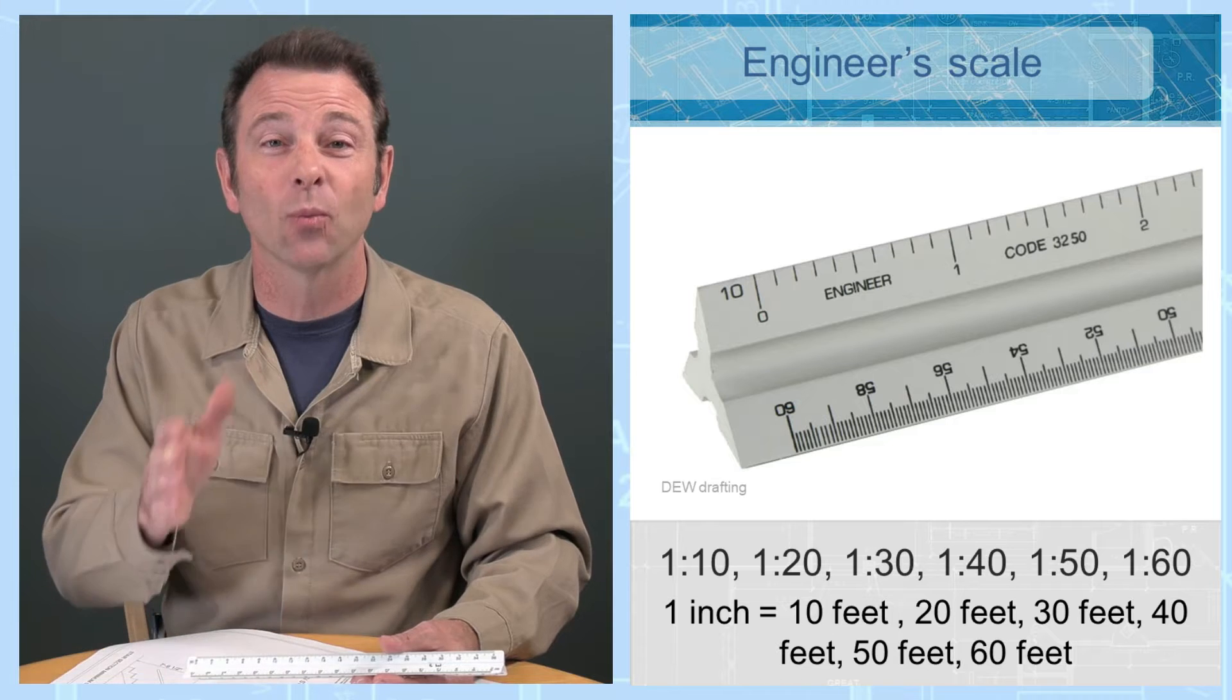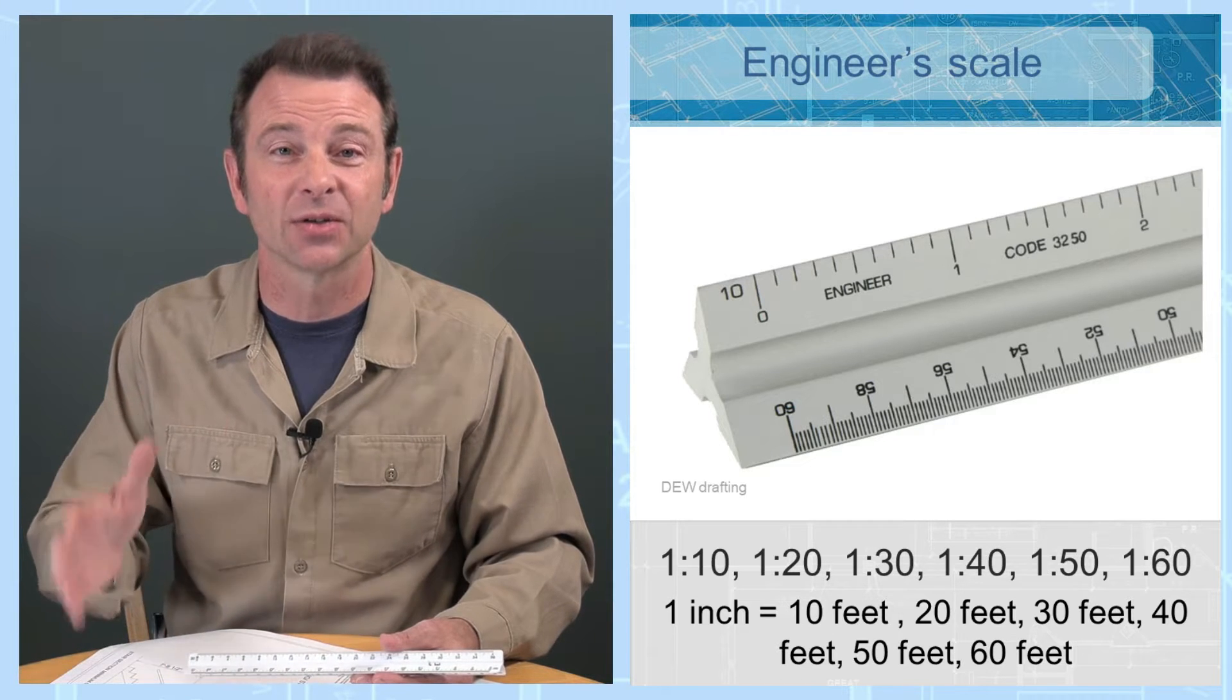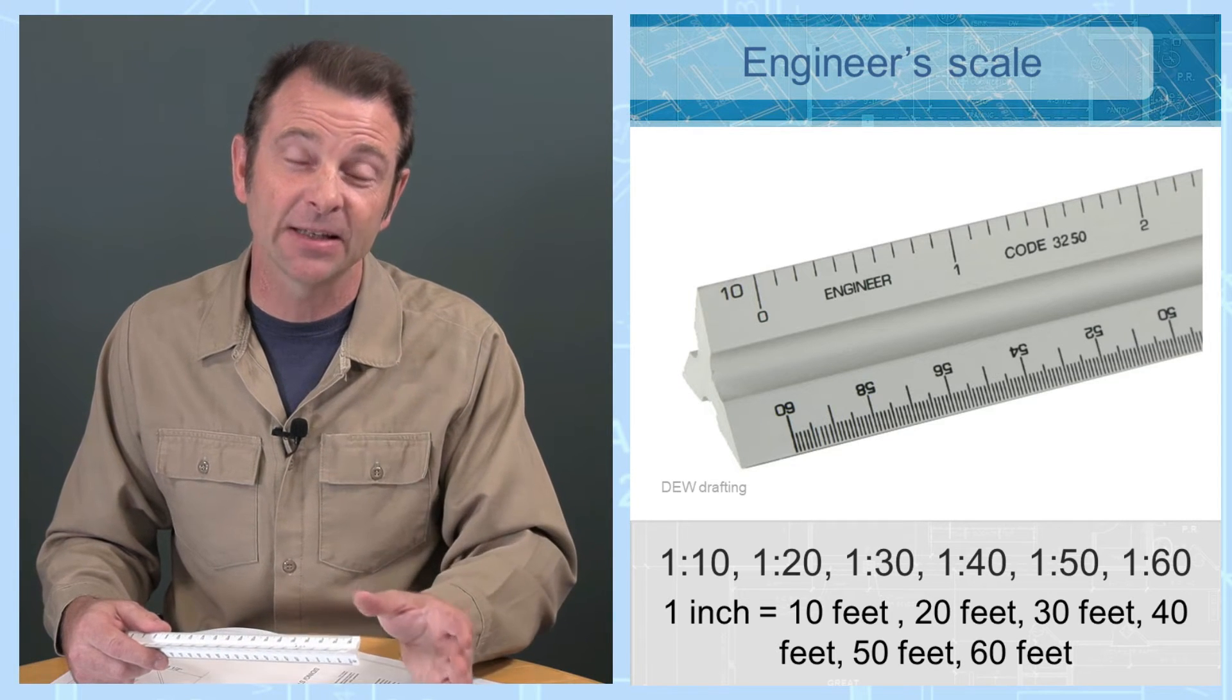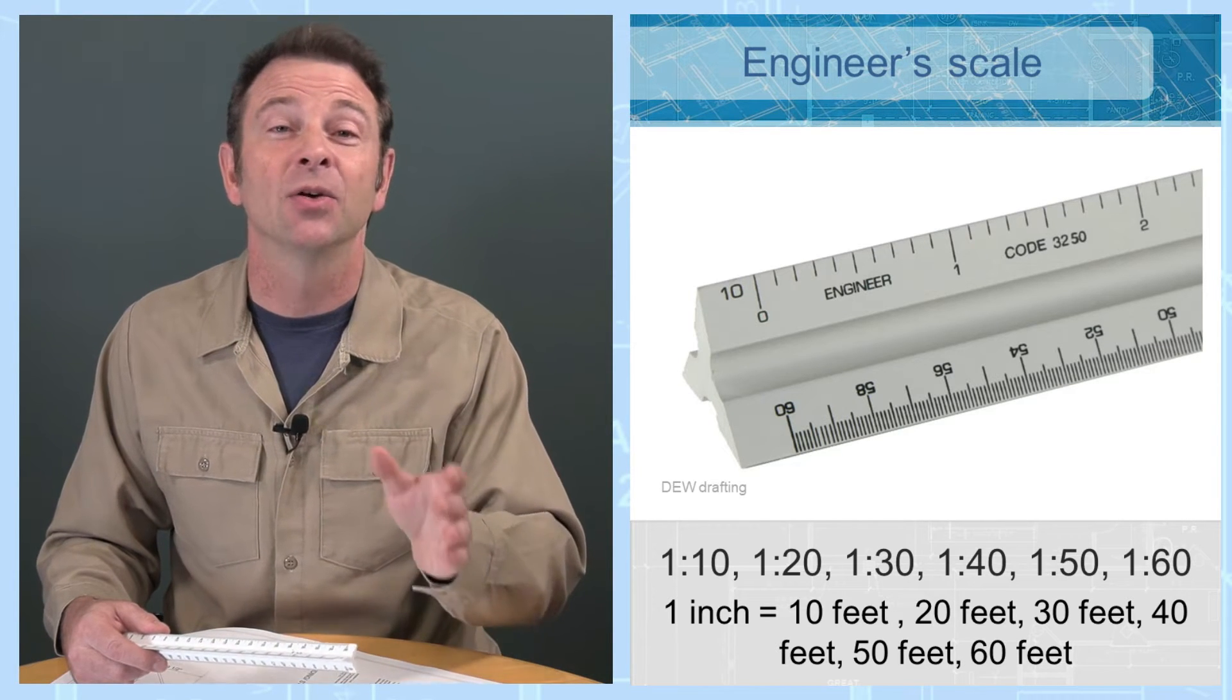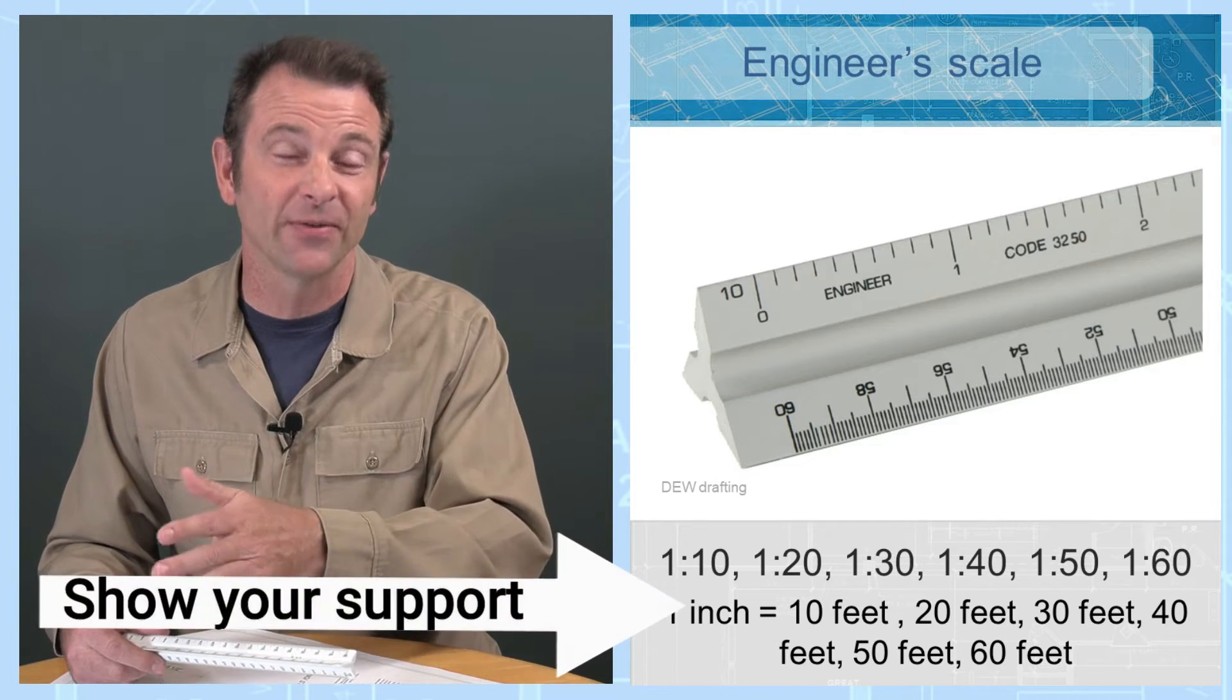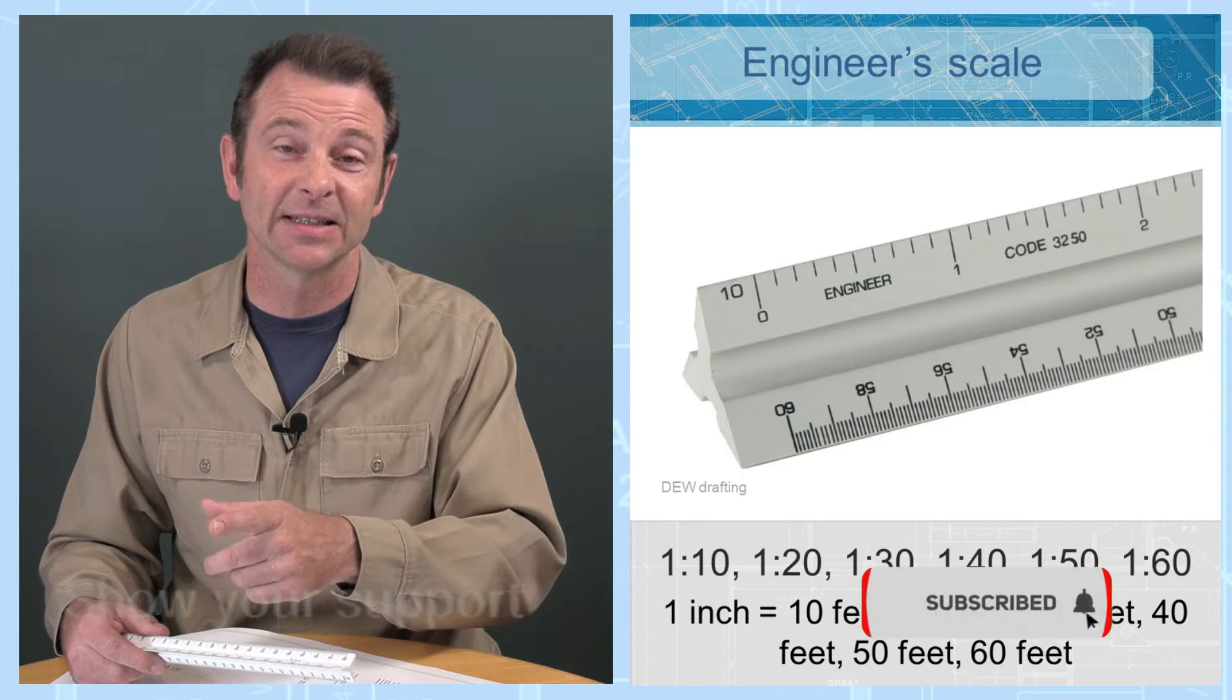It's all referencing one inch equals a certain number of feet. So you have for every inch, you have 10 feet, that would be 1 to 10. You have 1 to 20, which is one inch equals 20 feet, 30 feet, 40 feet, 50 feet, and 60 feet.